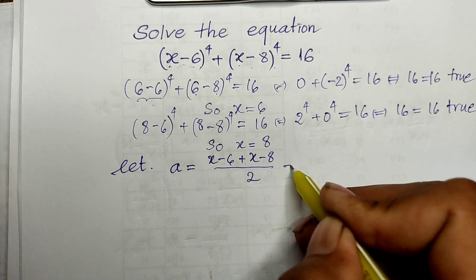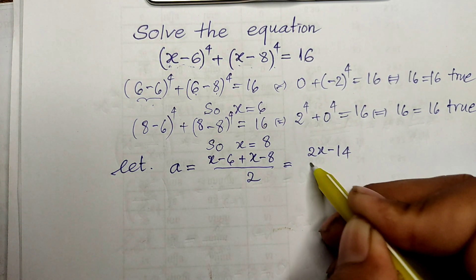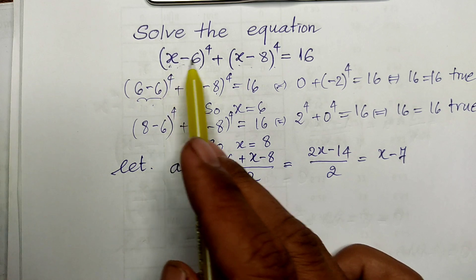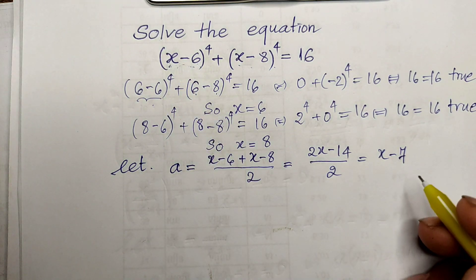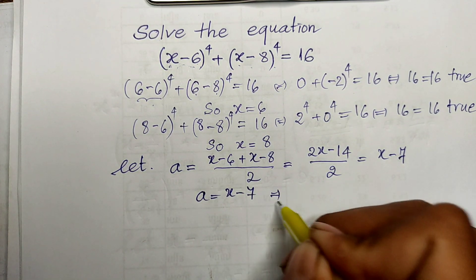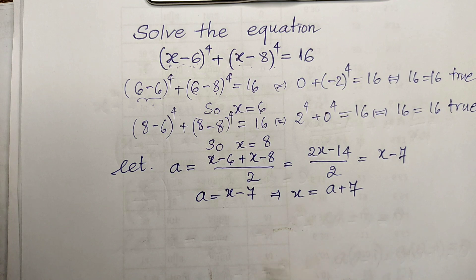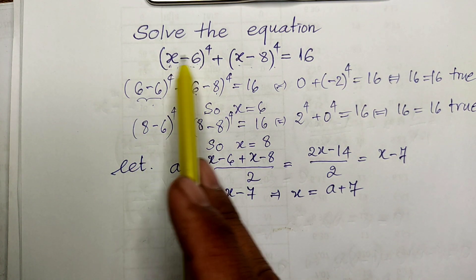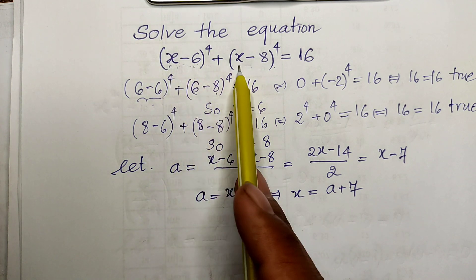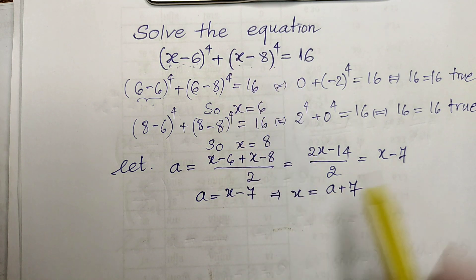I let a equal the average of (h minus 6) and (h minus 8), which is (h minus 6 plus h minus 8) divided by 2. That gives 2h minus 14 divided by 2, which equals h minus 7. So if I let a equal h minus 7, then h minus 6 equals a plus 1, and h minus 8 equals a minus 1.